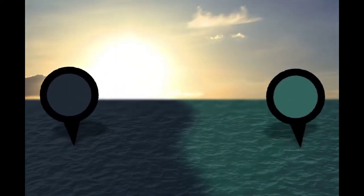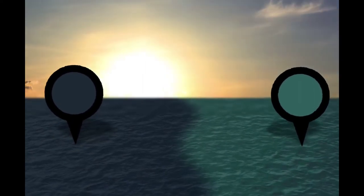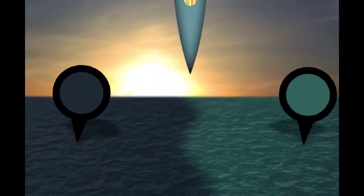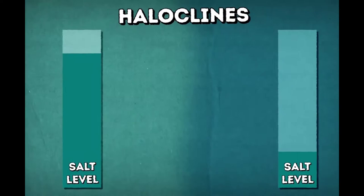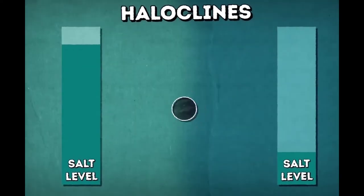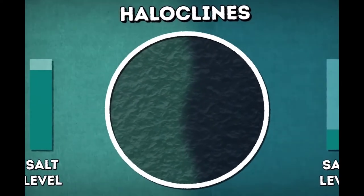The borders between the two bodies of water with different physical and biological characteristics are known as ocean clines. Haloclines, borders between waters with different salinity, are the most spectacular, and this is what we see when the Atlantic and Pacific oceans meet.